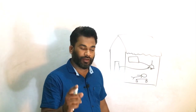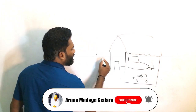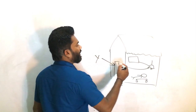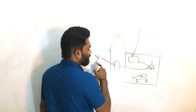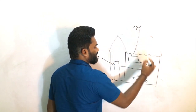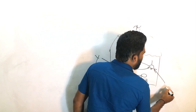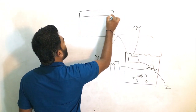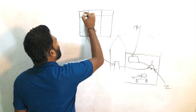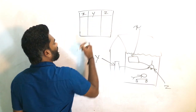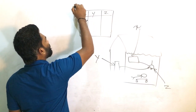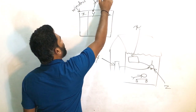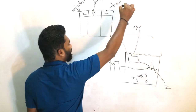I'll take the door as Y and the window as X, and the bell as Z. I'll write all three in a table like this — X, Y, and Z. So X is the window, Y is the door, and Z is the bell.